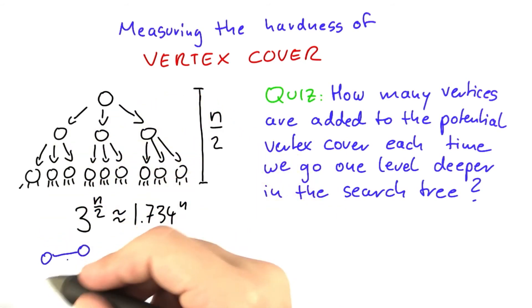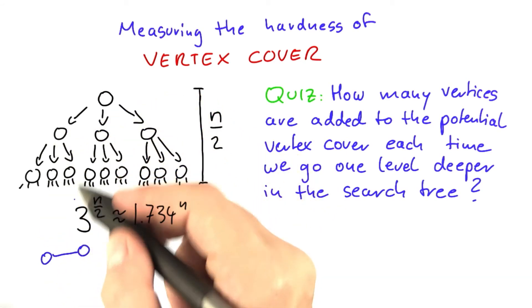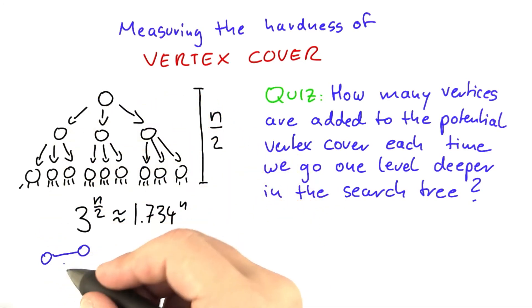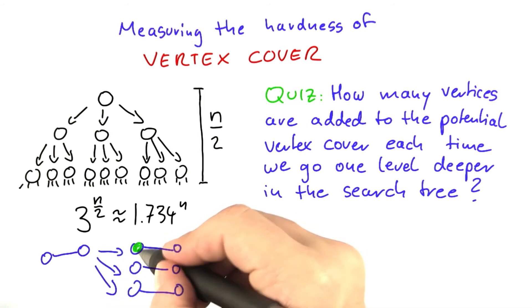Now, I would like you to quickly think about the following. So as you remember, at each level of the search tree, we're looking at an edge where the two endpoints have not yet had an assignment, and we're branching into three cases. This one, this one, and this one.